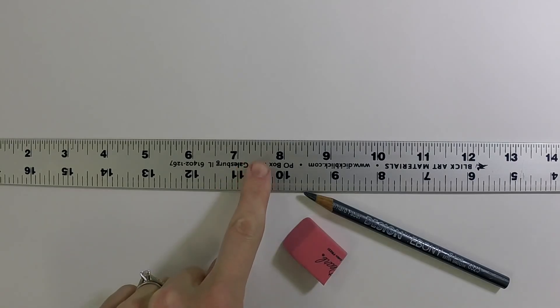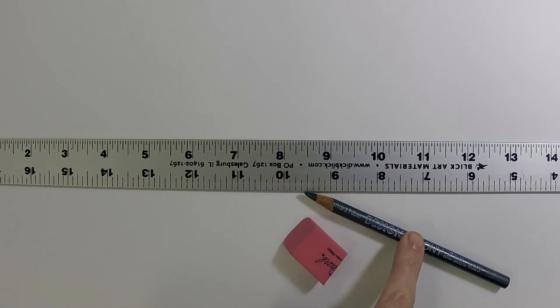In this tutorial we're going to be drawing shapes in one point perspective so you'll need a ruler, a pencil, and an eraser.